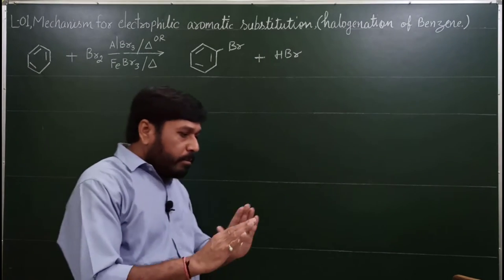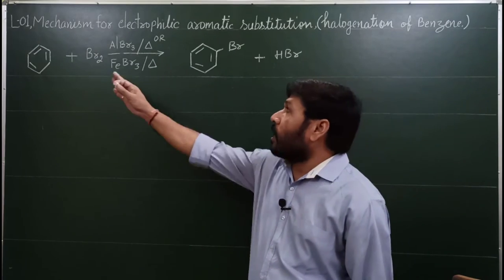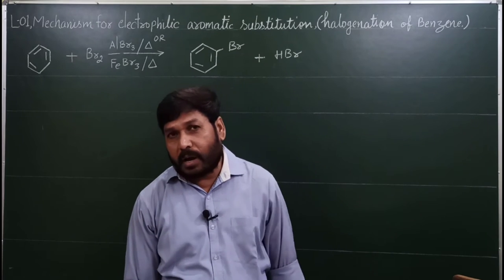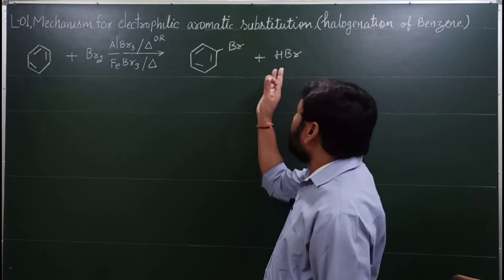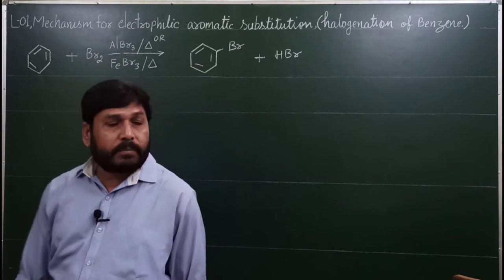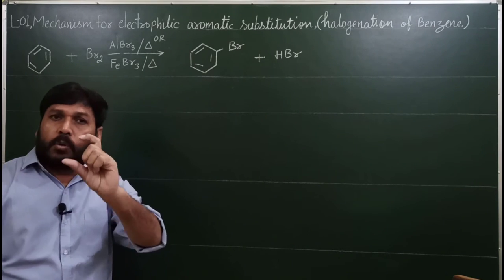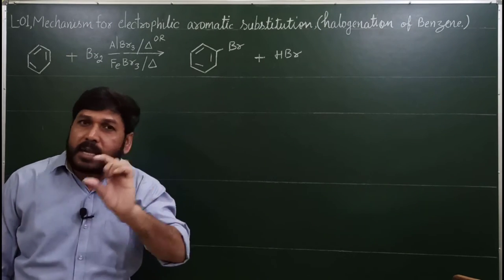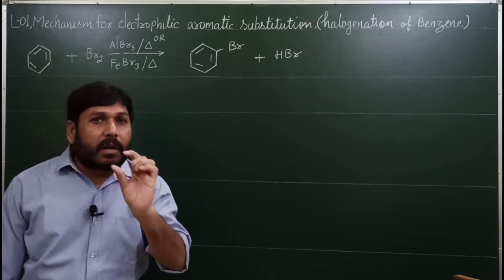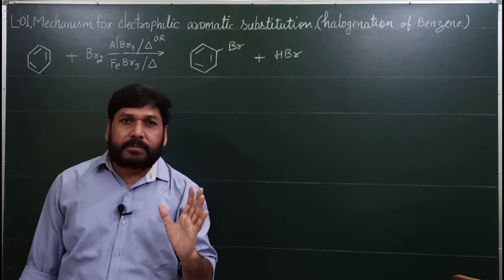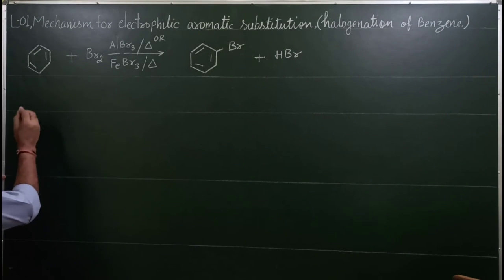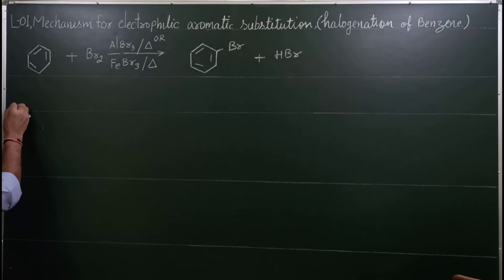अब इसकी mechanism के बारे में बात करते हैं — यह reaction आखिर होती कैसे है? कैसे Br2 एक electrophile का काम करता है और bromobenzene बनाता है? बहुत ही simple तरीके से समझिए — हर चीज जो मैं बोलता हूँ वो काम की होती है। Lewis acid का octet complete नहीं है, electrons की कमी है। चलिए अब mechanism लेते हैं — Step number one।